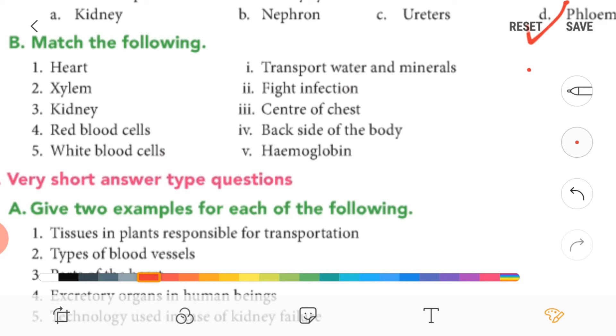Now guys let's match it. First one is heart, so it is present at the center of the chest. Second, xylem, so it transports water and minerals.